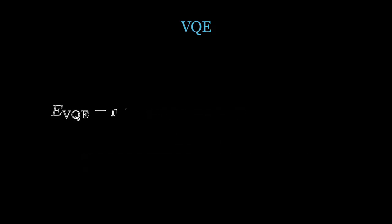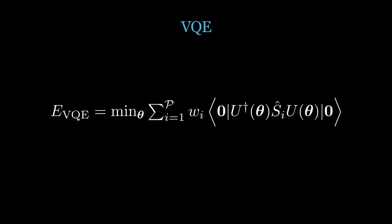The summation is then carried out in a classical computer, and the parameters are optimized in each iteration so as to arrive at the ground state energy.